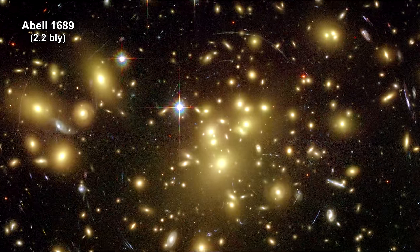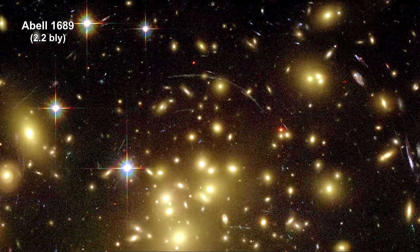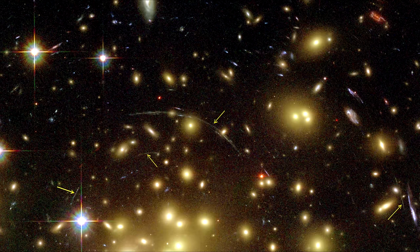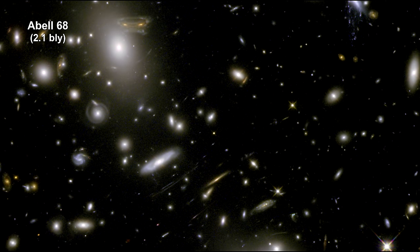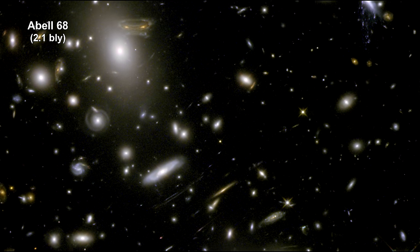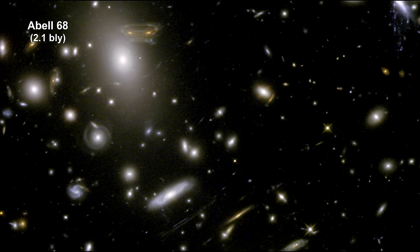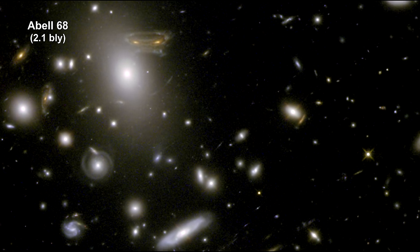This is Abell 1689, 2.2 billion light-years away. It's one of the most massive galaxy clusters known. Its gravity acts like a 2 million light-year wide lens in space. Here again we see how the gravitational field surrounding this massive cluster acts as a natural lens to brighten and magnify the light coming from very distant background galaxies.